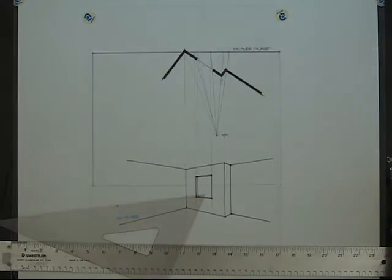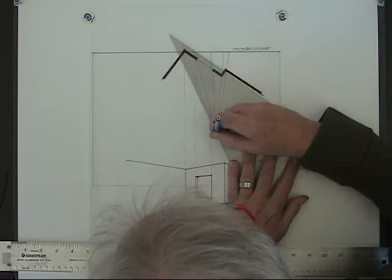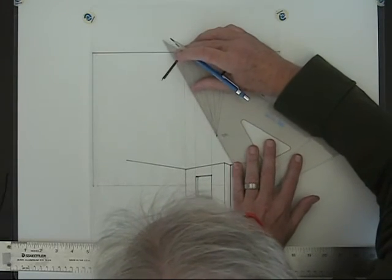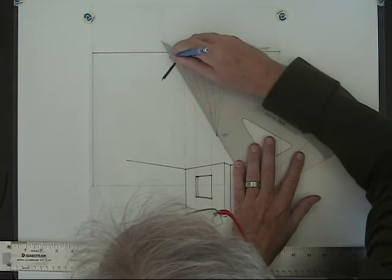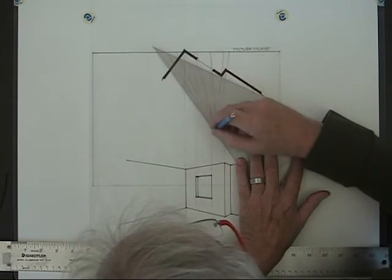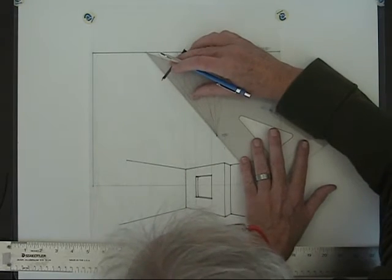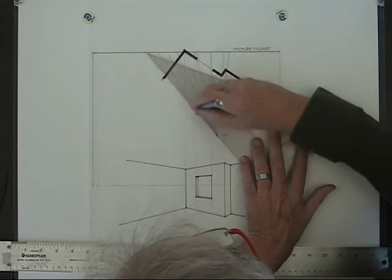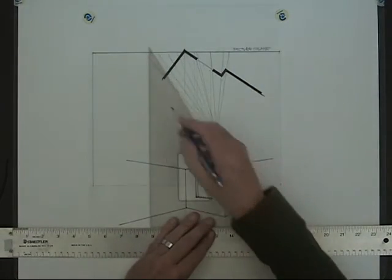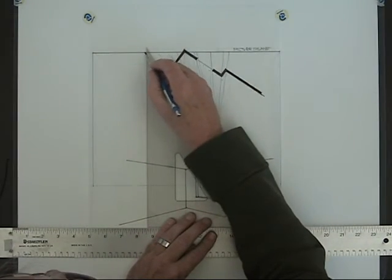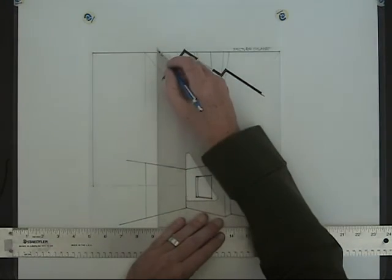Now I have to take each one of these points from the station point and run them up to the picture plane. There's the two foot, four foot, six foot, eight foot lines. And you're beginning to see just how much plotting and projection this methodology requires.